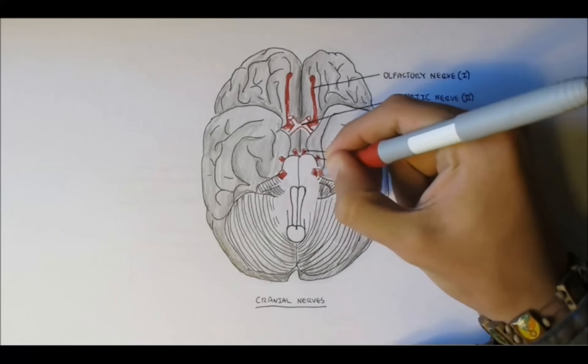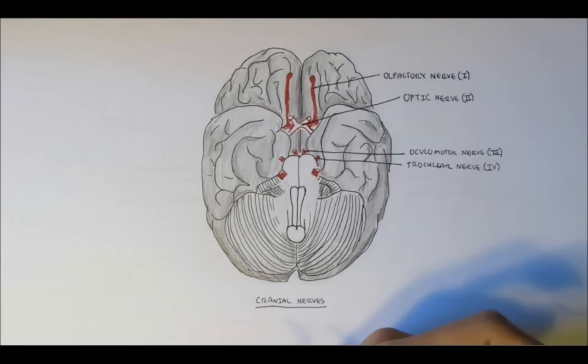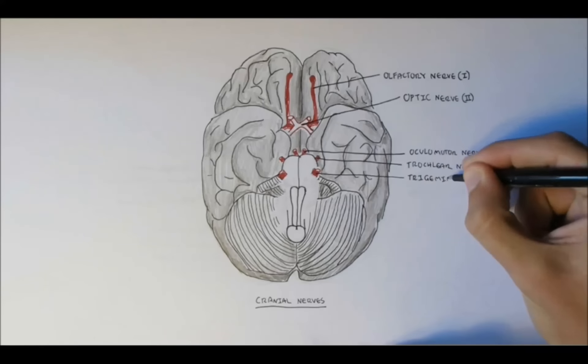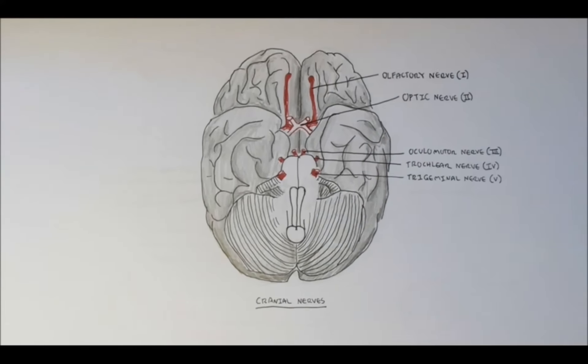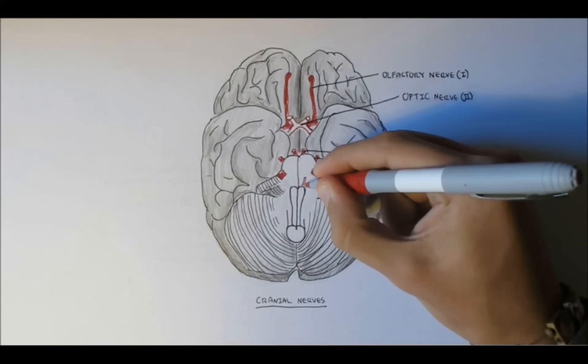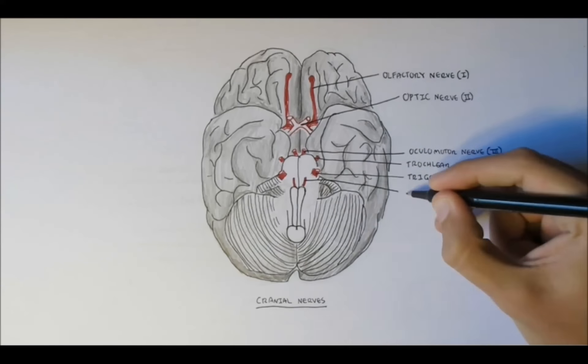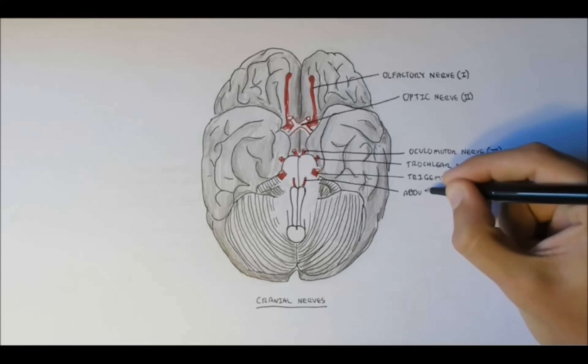Coming out of the pons, we have the trigeminal nerve, nerve 5. And also from the pons, we have nerve 6, which is the abducent nerve.